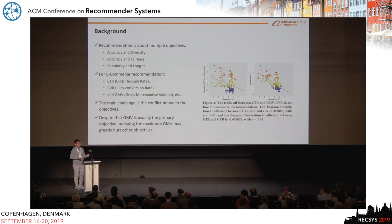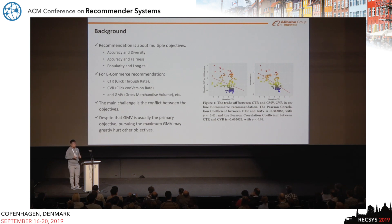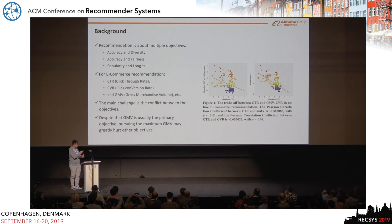We collected real-world data from a recommendation system and plotted curves of normalized CTR against normalized GMV. This figure indicates that, in many cases, optimizing CTR and GMV at the same time means there exists a conflict.